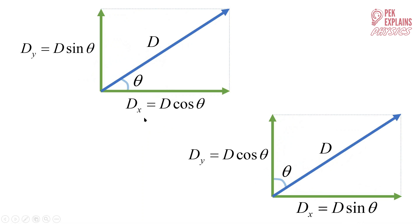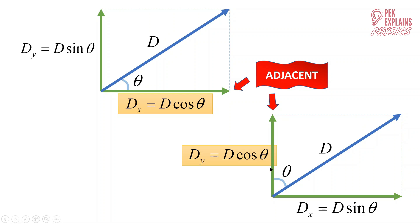In conclusion, we have two situations. The first situation is angle theta with the X component. The second situation is angle theta with the Y component. If angle theta is with the X component, then DX uses D cosine theta. But if angle theta is with the Y component, then DY uses D cosine theta — the component adjacent to the angle theta uses D cosine theta.